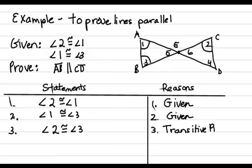Now once we have angles 2 and 3 congruent, what we can say is because angle 2 and angle 3 are alternate interior angles, we are going to end up with parallel lines.